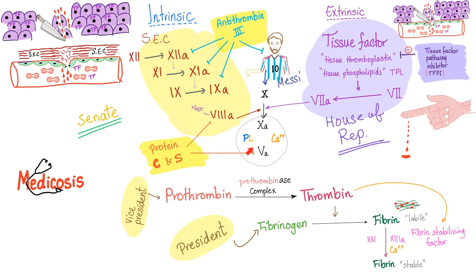But in Factor V Leiden, Factor V is now mutant. It does not obey protein C and S, and therefore it's always activating thrombin, then fibrin, and always forming clots. That's why Factor V Leiden is not a bleeding disorder but a thrombophilic disorder.